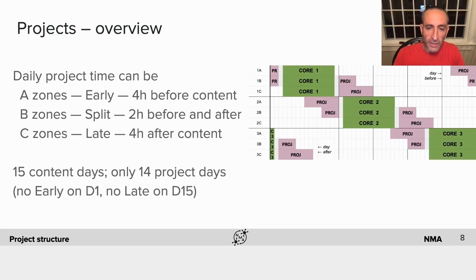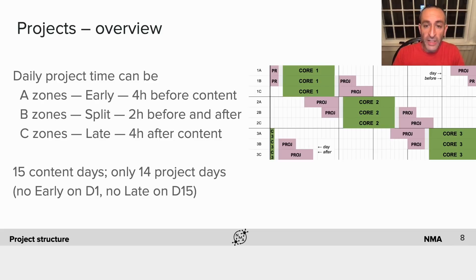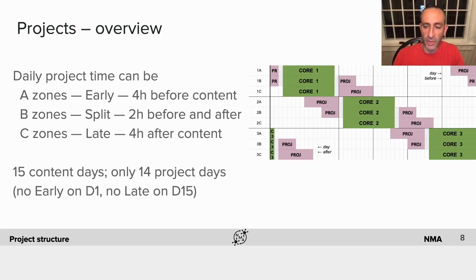The project time is divided by time zones — some people have project time before the course content, some after, and some have it split. There are 15 days of course content but only 14 project days, because there's no early day on day one and no late day on day 15. So you'll have 14 days to work on these projects.